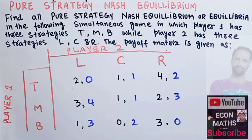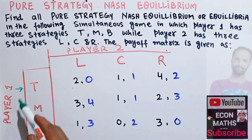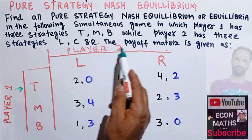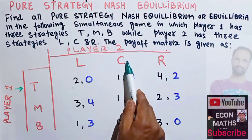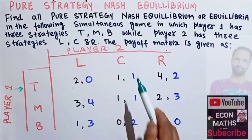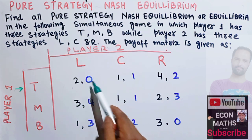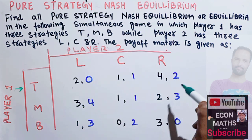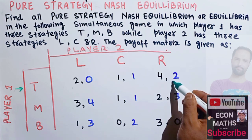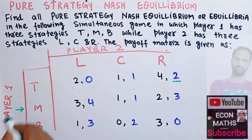Let's take Player 2 into consideration first. Suppose Player 1 chooses strategy T. Player 2 then has three options: L, C, or R. Choosing L gives a payoff of 0, choosing C gives 1, and choosing R gives 2. Player 2 will maximize their payoff by choosing R, so we underline that. Next, suppose Player 1 chooses M — again Player 2 has three options: L, C, or R.